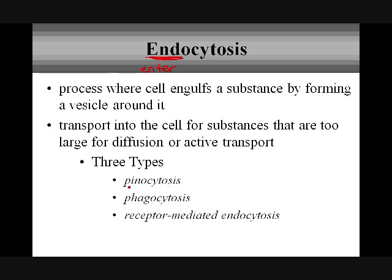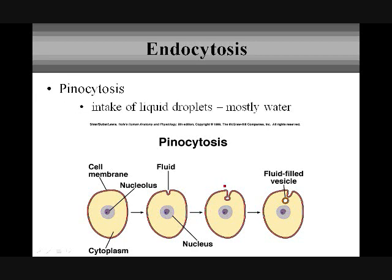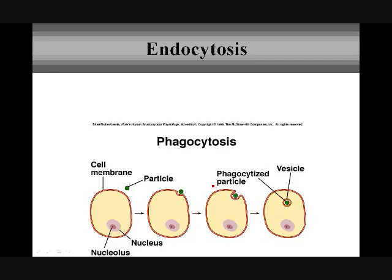We have three types of endocytosis: pinocytosis, phagocytosis, and receptor-mediated endocytosis. In pinocytosis, what we're talking about is liquid — mostly water. The fluid moves toward the cell membrane, the cell membrane starts to dimple in and form a vesicle until the vesicle pinches off, closes in, and moves into the cell. If it's non-liquid, that vesicle would need to be broken down — in that case it would be phagocytosis.